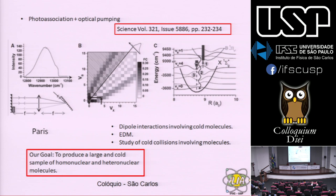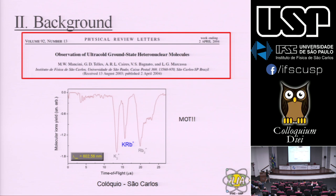O meu background nisso foi o experimento de 2004: a gente foi o primeiro no mundo a ver moléculas frias sendo feitas a partir de átomos frios — em particular, moléculas heteronucleares. No caso, a gente viu o KRb em 2004. Fui ao MIT, voltei, e decidi montar um experimento.